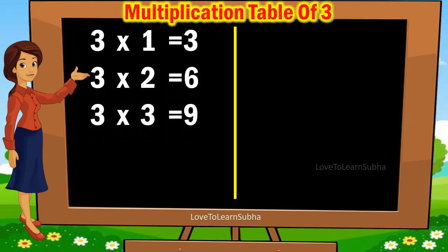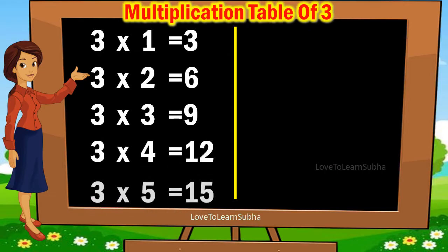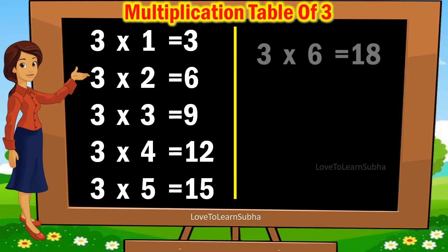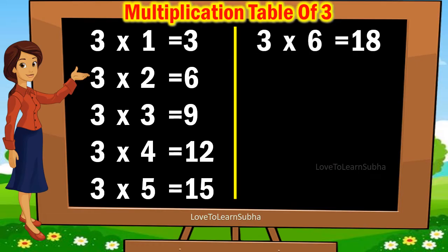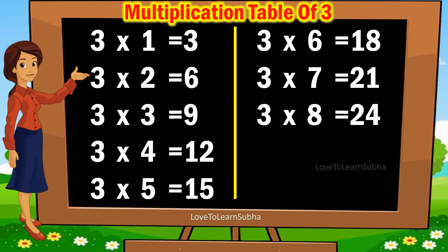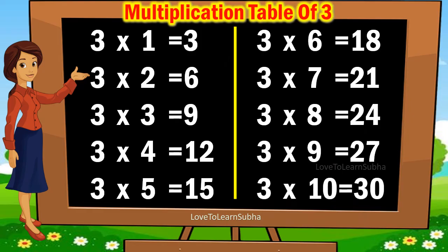Multiplication table of 3: 3 sixes are 18, 3 sevens are 21, 3 eights are 24, 3 nines are 27, 3 tens are 30.